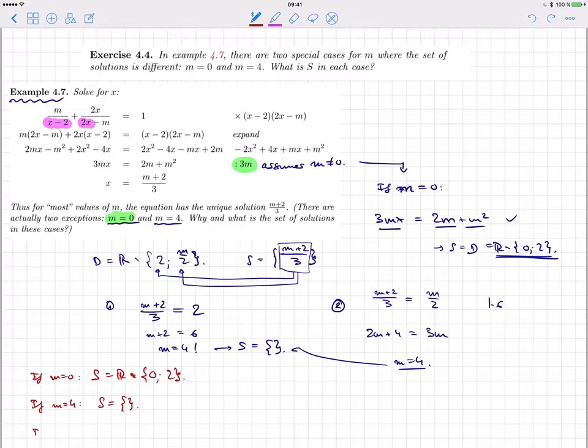And in any other case, we get as the solution M plus 2 over 3. We get the single solution M plus 2 over 3.